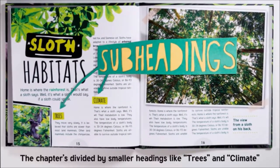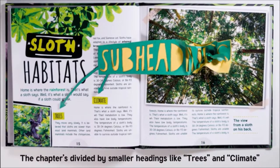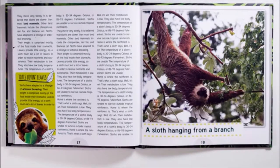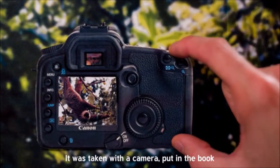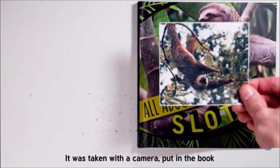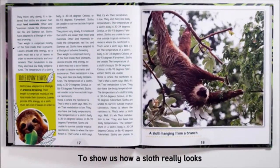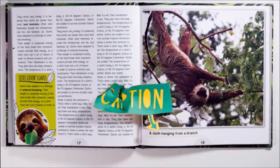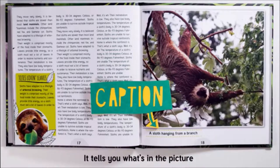There are subheadings too. The chapter's divided by smaller headings like trees and climate. Leo sees a picture that makes him laugh. A sloth hanging from a branch. That's a photograph. It was taken with a camera. Put in the book to show us how a sloth really looks. Underneath the photo there's a quick description. That's a caption. It tells you what's in the picture.